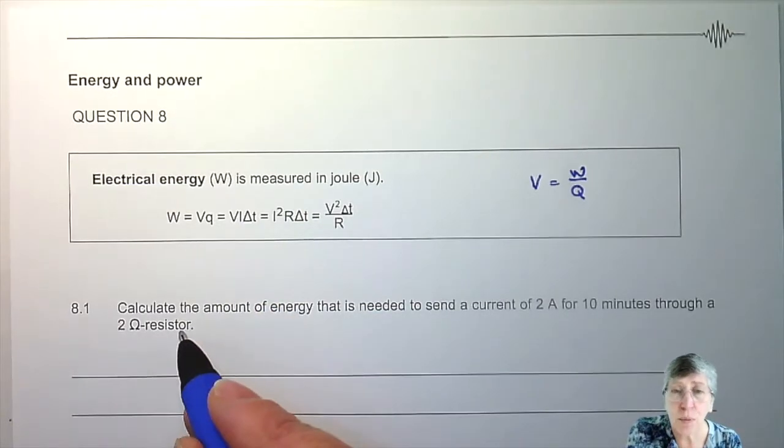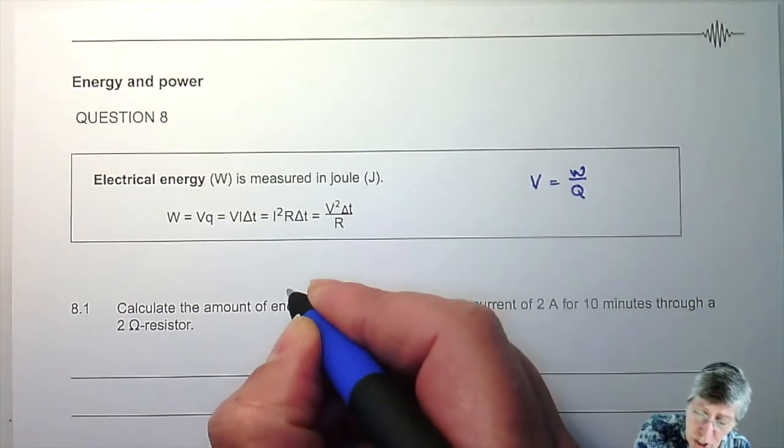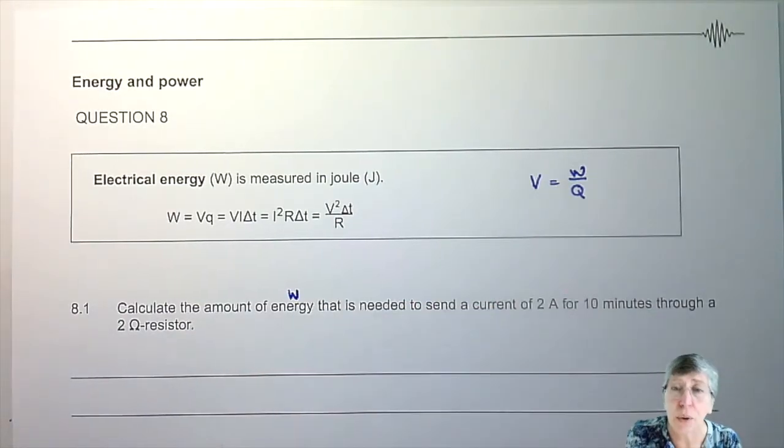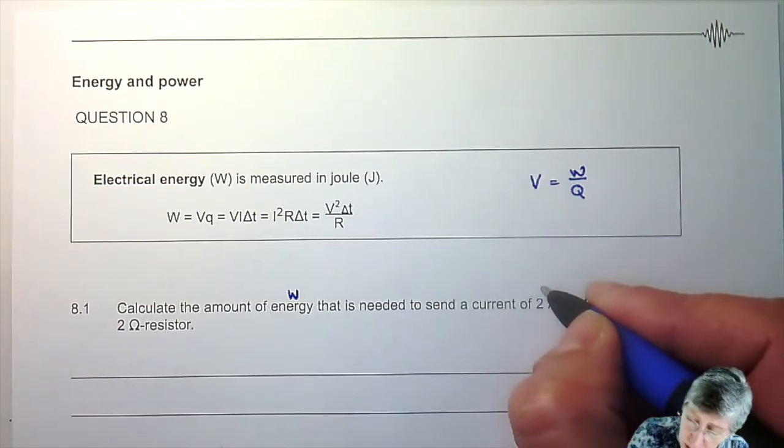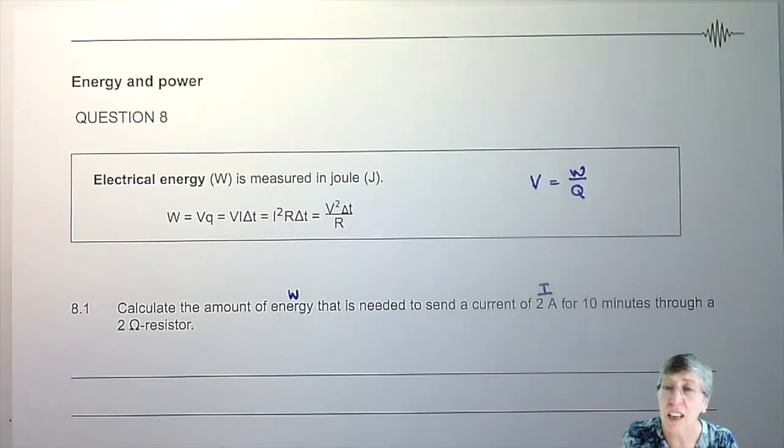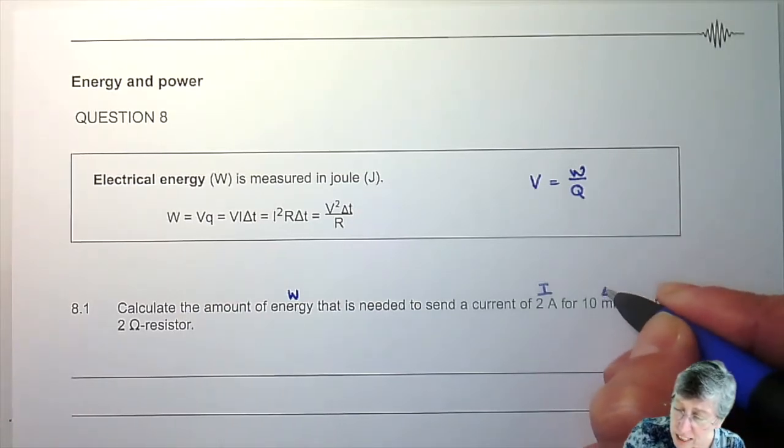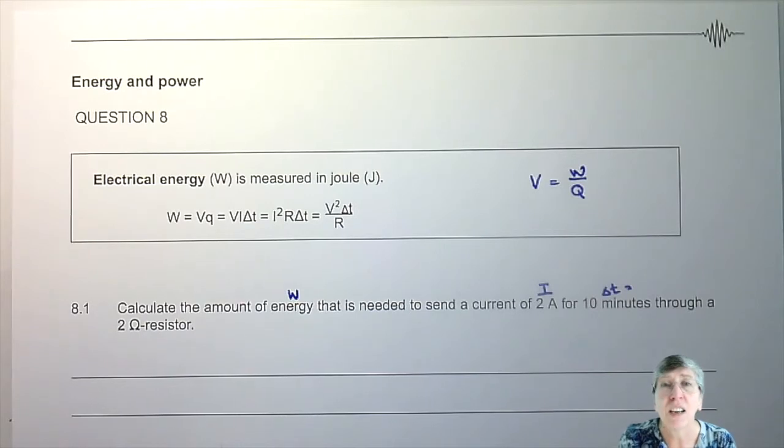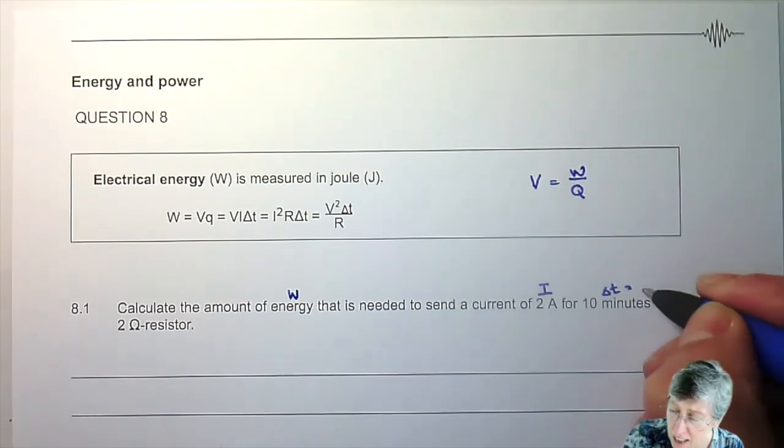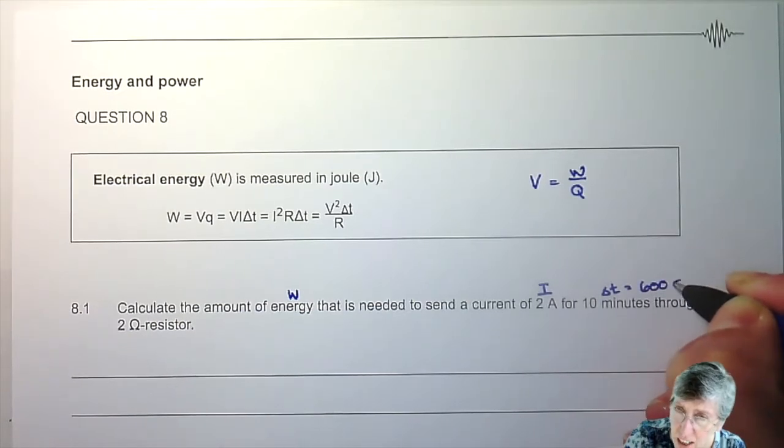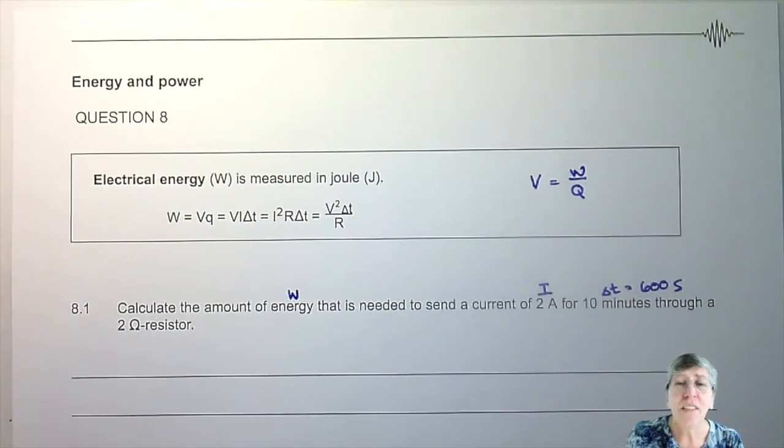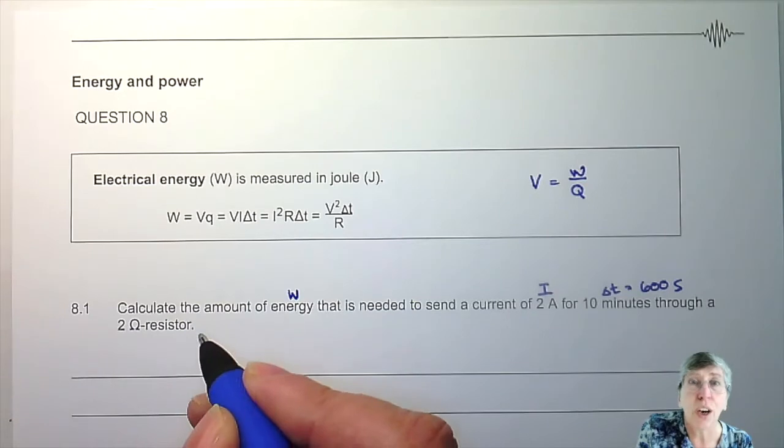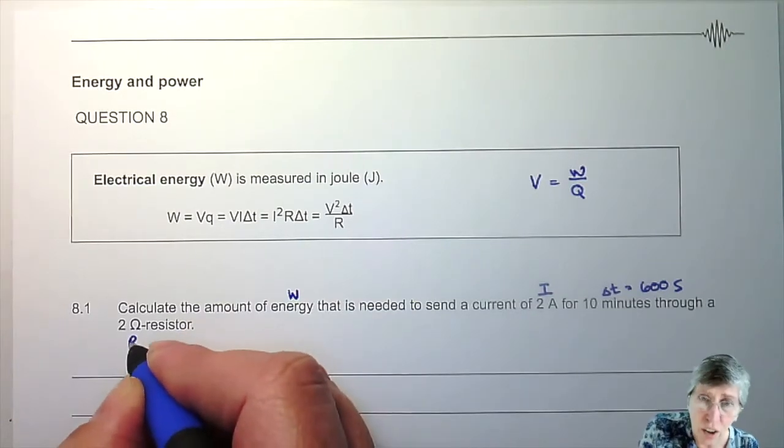Now let's look at the first example. Calculate the amount of energy that is needed to send a current of 2 ampere for 10 minutes—that will be Δt, and important, we don't want that in minutes. Time must be in seconds, so I'm going to multiply by 60 and then I end up with 600 seconds. And then we are told through a 2 ohm resistor, so I've got R as well.